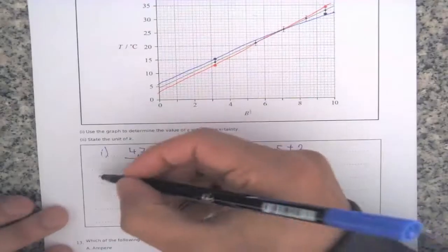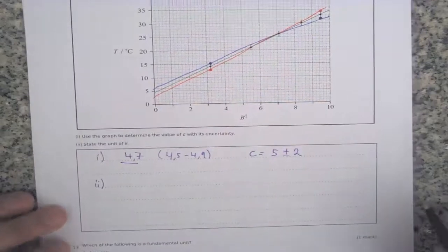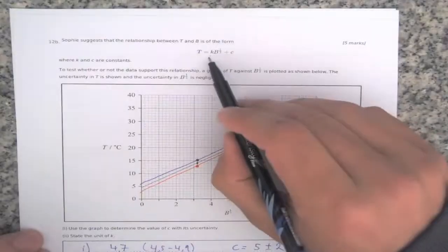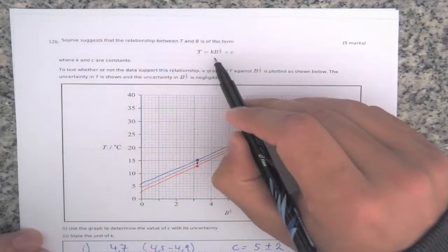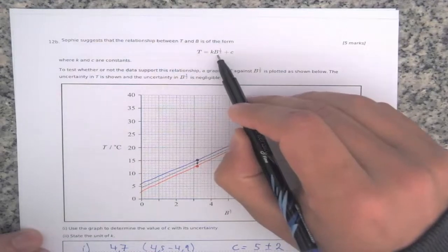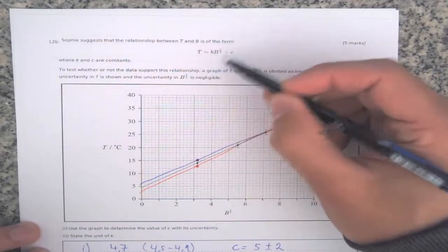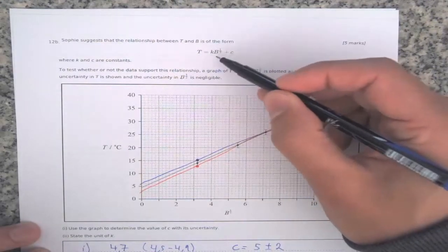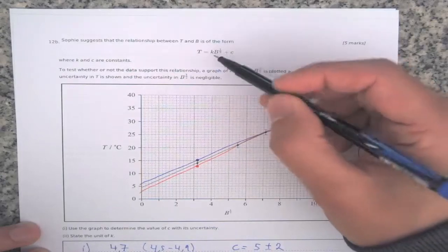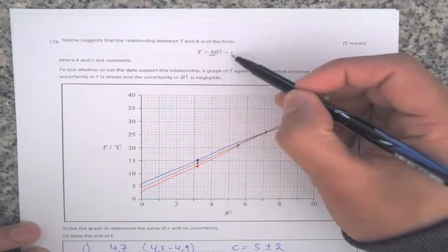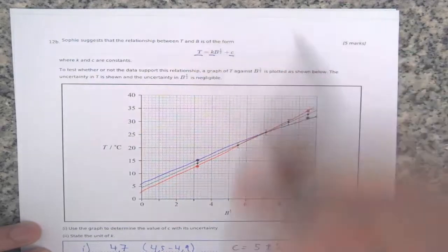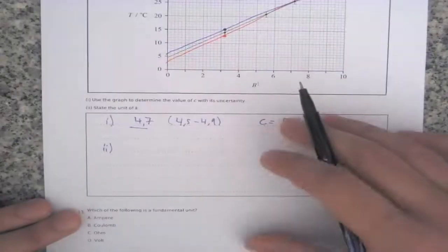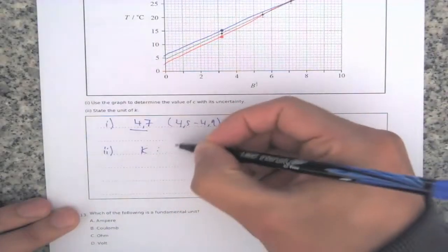Number 2: state the unit of K. Looking at the relationship, K multiplies B to the power of one-half. B is a percentage, so it is dimensionless — it has no units. Therefore K and C must have the same units as T. So the units for K are degrees Celsius.